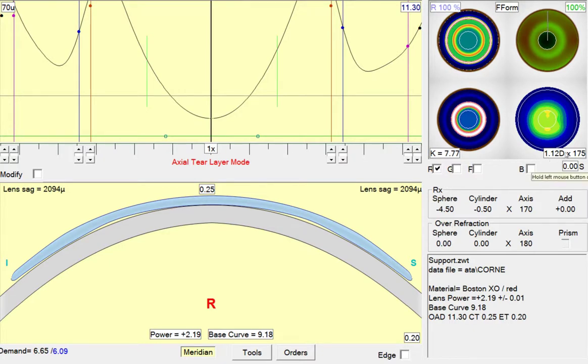We do have about a diopter of cylinder on the cornea, but only a half diopter in the refraction, so that suggests we've got some internal astigmatism and the way to correct the positioning of the lens is probably go to a G-SIM lens, but we don't really want to have a G-SIM refractive correction because then we'll have residual against the rural cylinder.